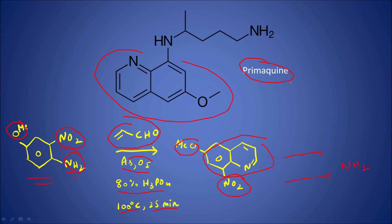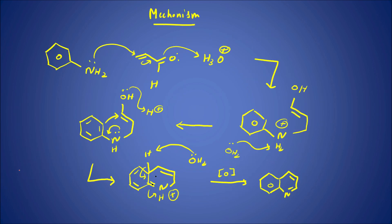Once we get the NH₂ group, we can further synthesize primaquine. So this is a preceding step to the synthesis of primaquine. Once the NH₂ group is in place, in the next step we can complete the primaquine synthesis. This is the initial step required to synthesize this anti-malarial drug. We can also make fluorinated derivatives of primaquine — for example, fluorine at the ortho or meta position — which are even better anti-malarial drugs.